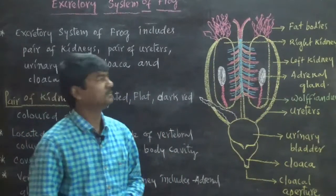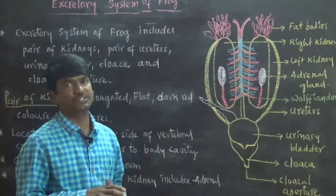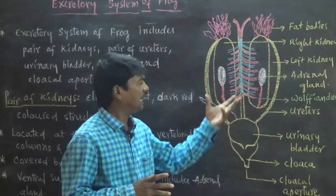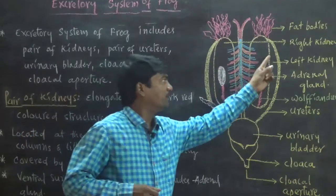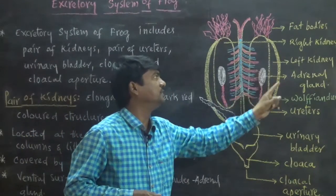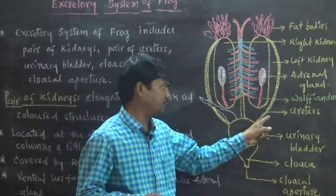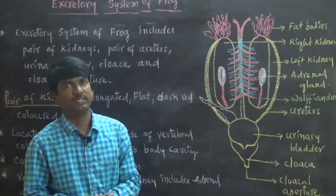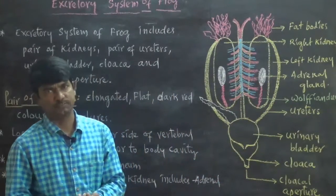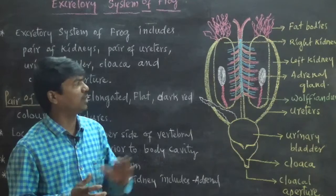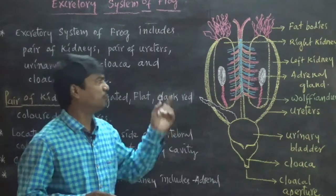The excretory system of frog is composed of various structures. It involves one pair of kidneys (left kidney and right kidney), one pair of ureters (left ureter and right ureter), urinary bladder, along with the cloaca and cloacal aperture. These are the structures involved in the formation of the total excretory system of frog.